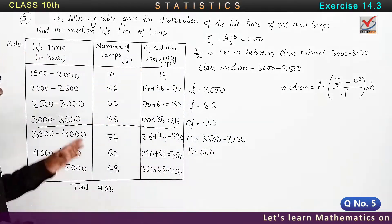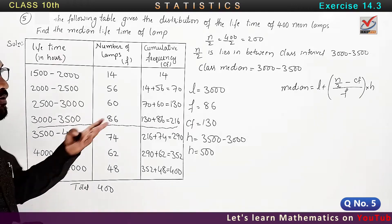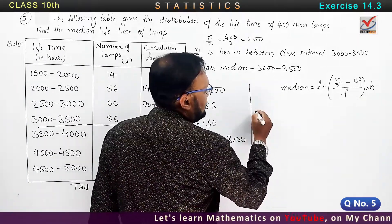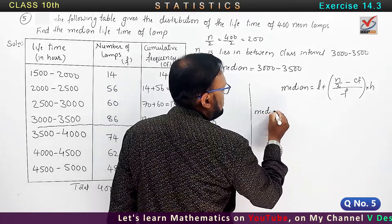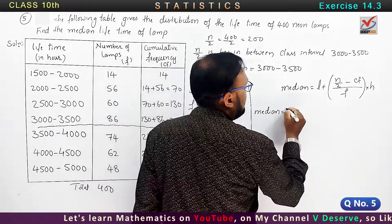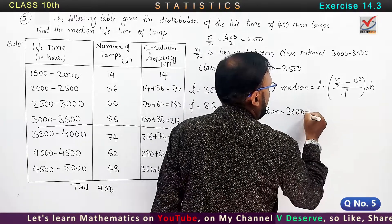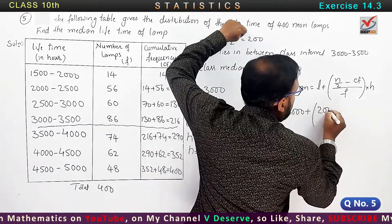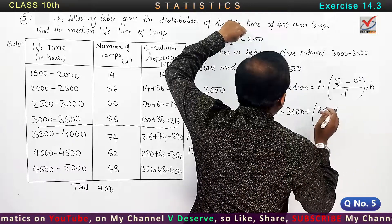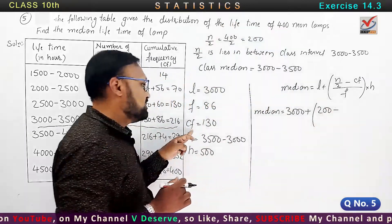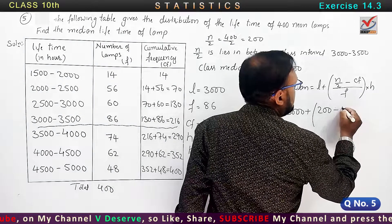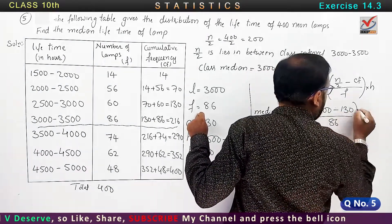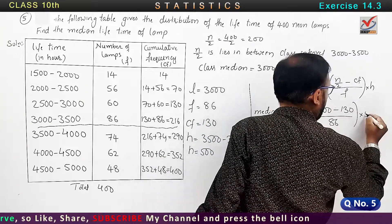Now put the values. Median is equal to L = 3000, plus n by 2 = 200, minus CF = 130, divided by f = 86, into 500. So 3000 plus (200 minus 130) divided by 86 into 500.